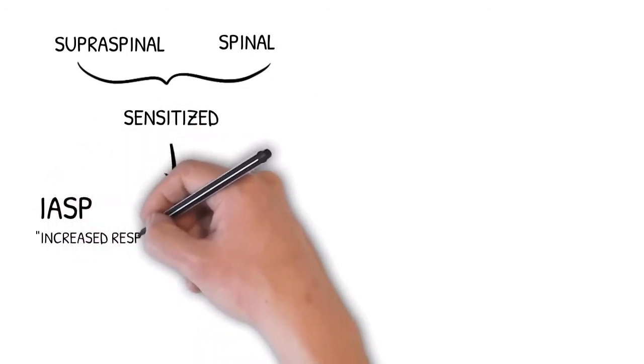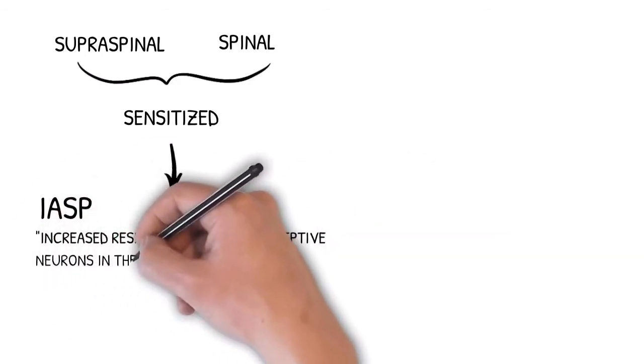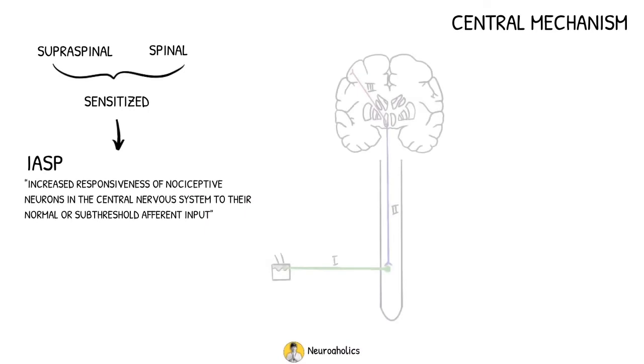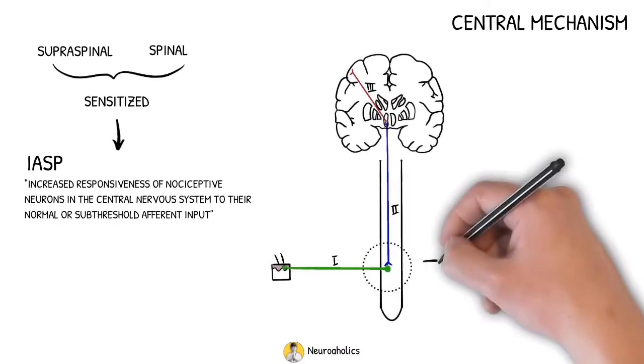With persistent nociceptive input, like that seen in peripheral neuropathy, this central sensitization becomes maladaptive. The International Association for the Study of Pain defined central sensitization as increased responsiveness of nociceptive neurons in the central nervous system to their normal or subthreshold afferent input. At the synapse of second-order neurons in the spinal region, this increased responsiveness can involve changes in calcium permeability, receptor overexpression, and synapse location.